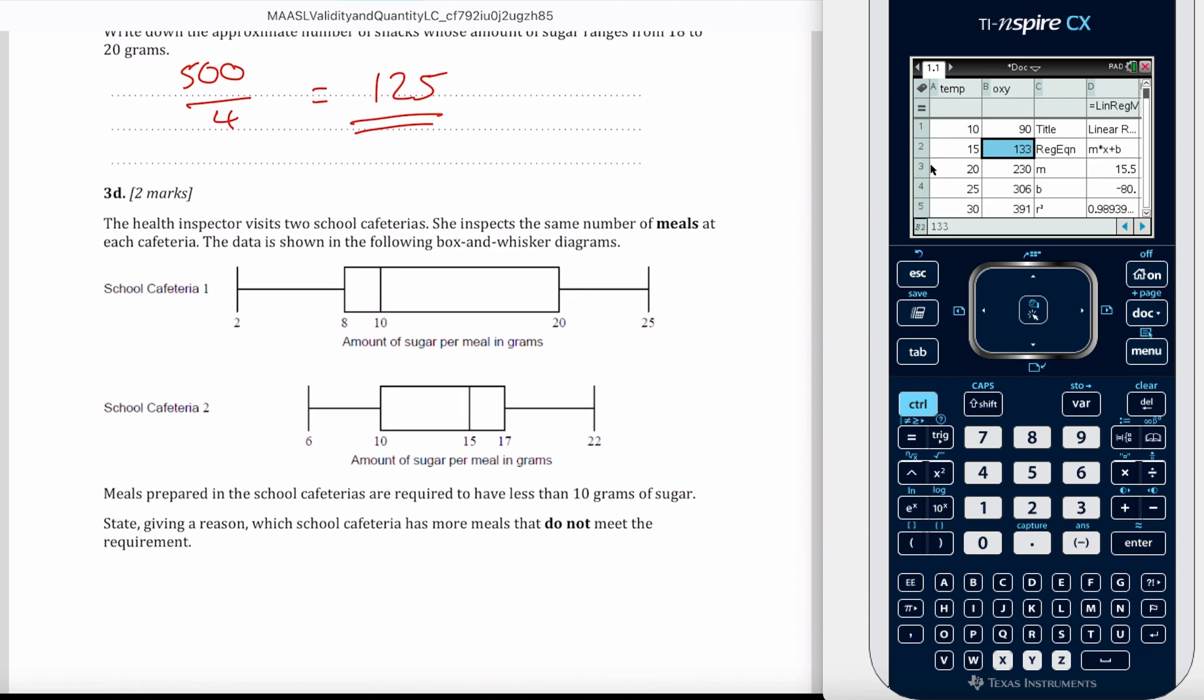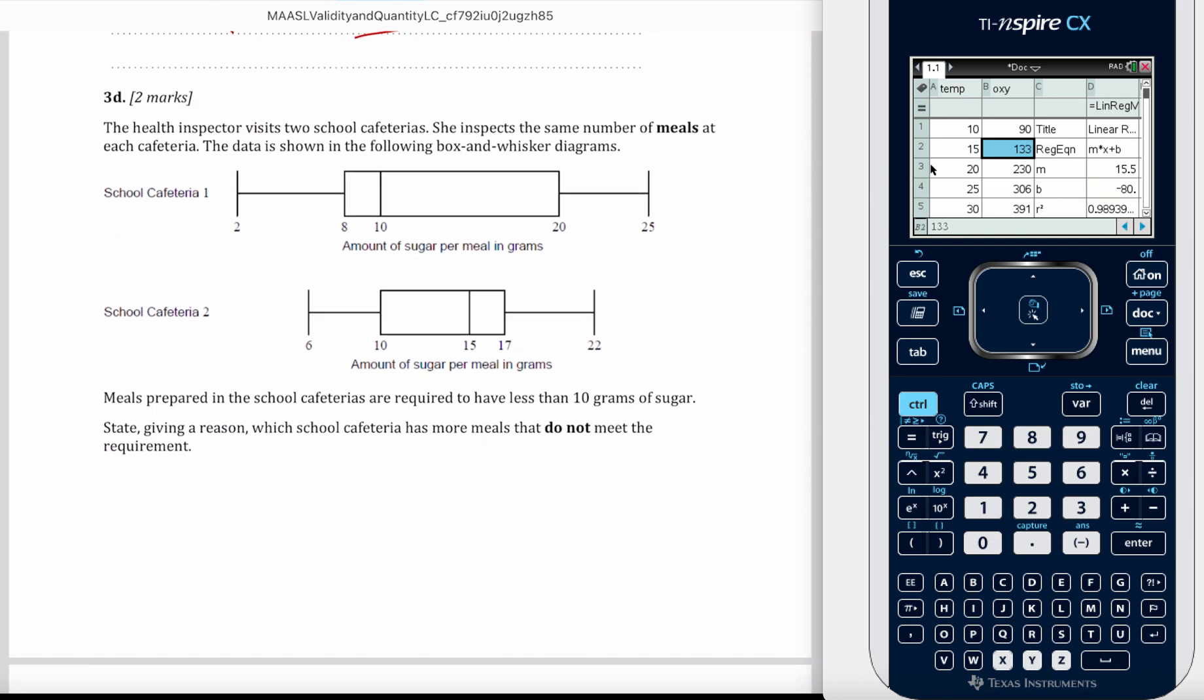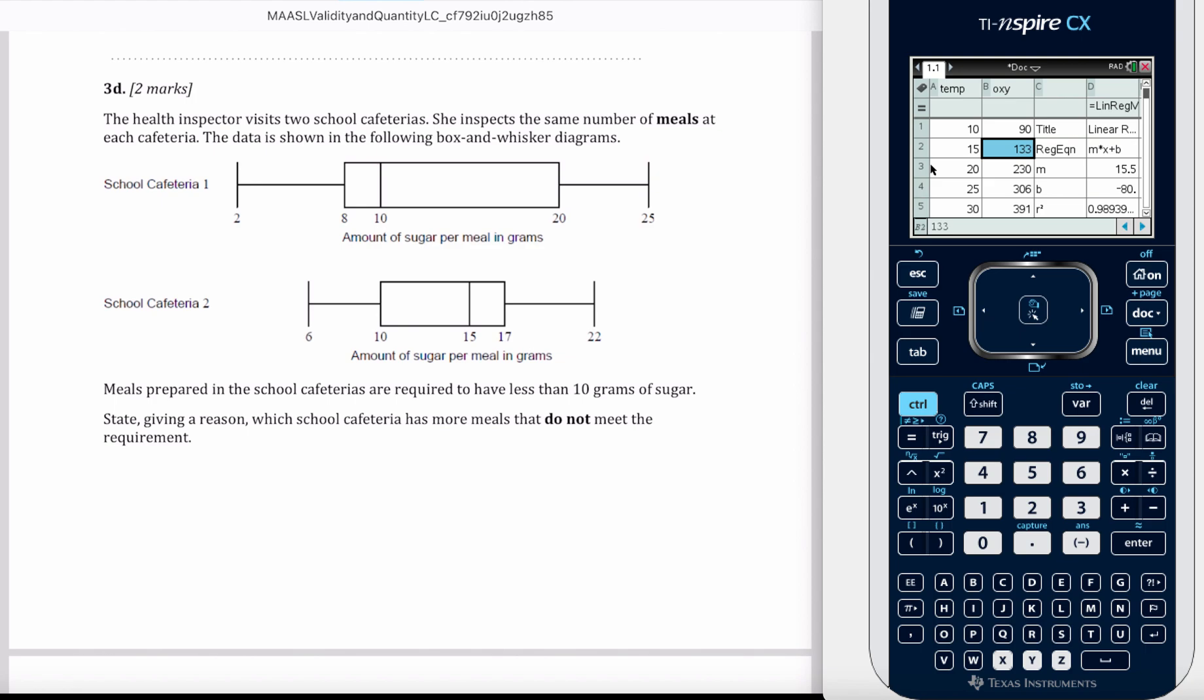The health inspector visits two school cafeterias. She inspects the same number of meals at each cafeteria. The data is shown in the following box-and-whisker diagrams. Meals prepared in the school cafeterias are required to have less than 10 grams of sugar. State, giving a reason, which school cafeteria has more meals that do not meet the requirement.